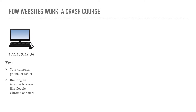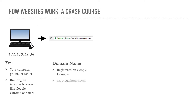The next step in the process is when you go to a domain name such as reddit.com, facebook.com, or even blogwinners.com. A domain name is a something.com, a something.net, a something.guru — there are all sorts of them nowadays.